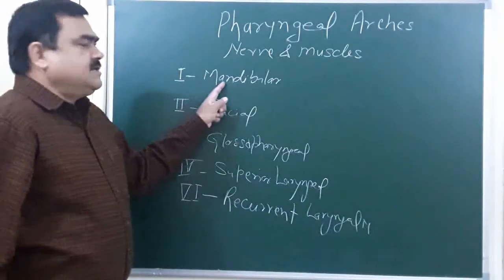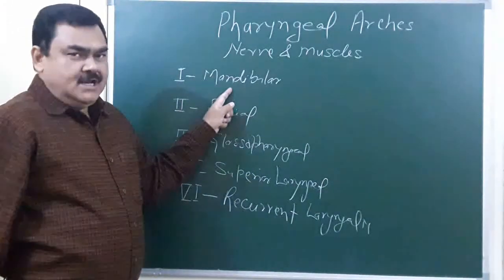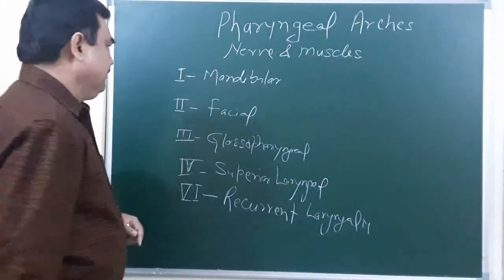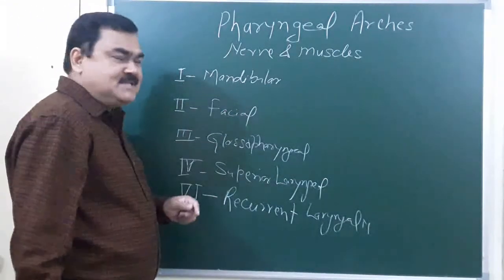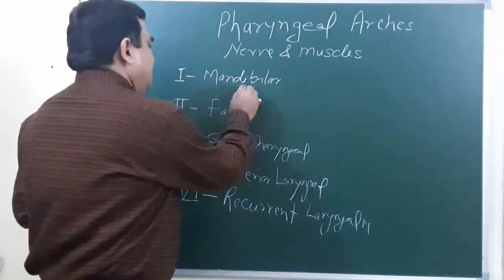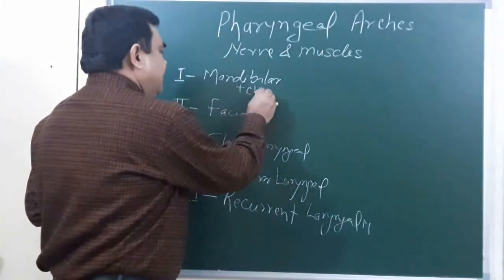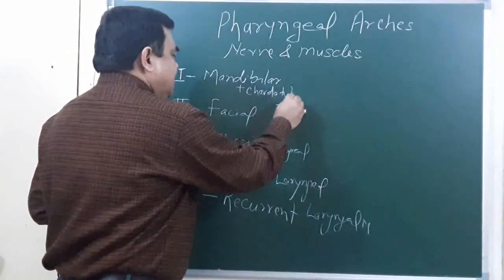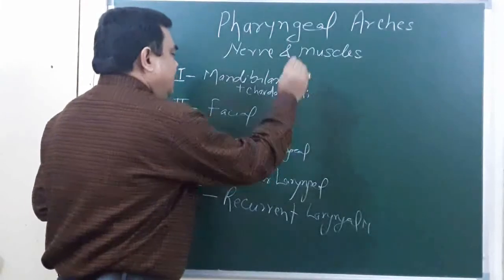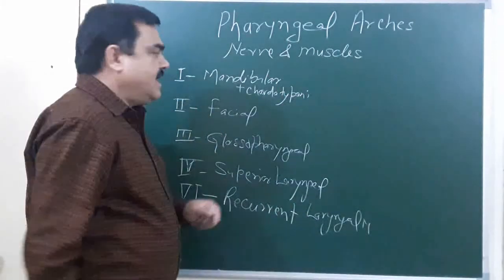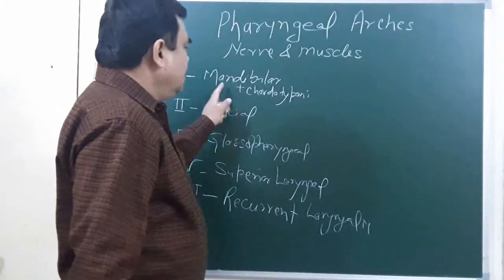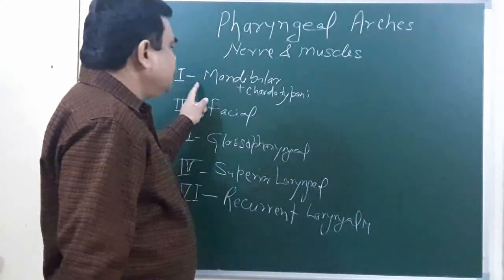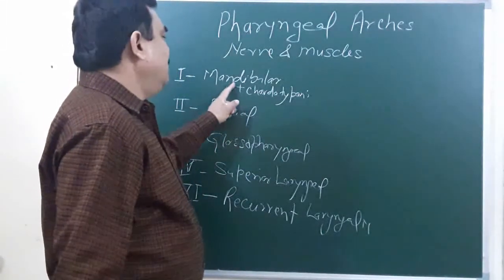The first arch has one additional nerve, that is the chorda tympani, which is a special sensory nerve carrying taste sensation. So the motor nerve of the first arch is the mandibular nerve, and the chorda tympani is its special sensory component.